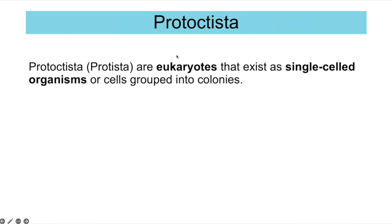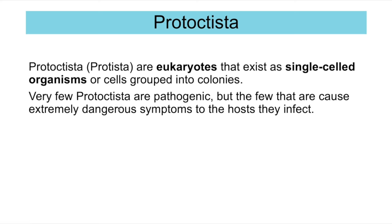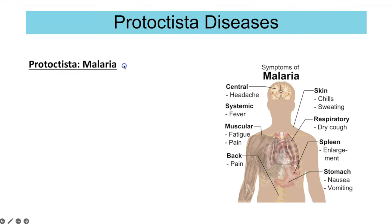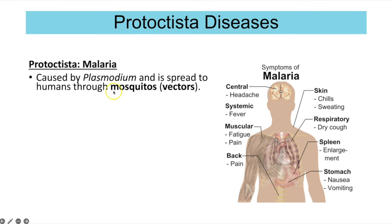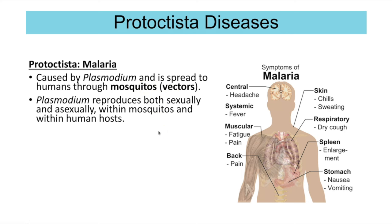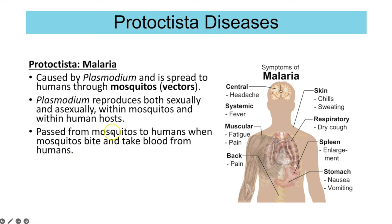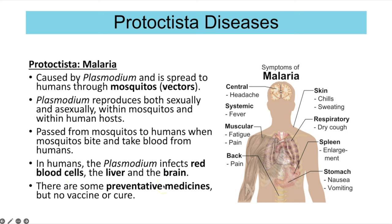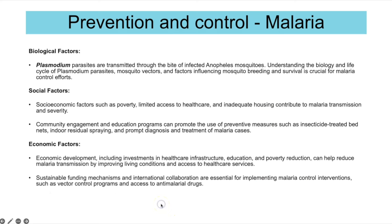Protoctista — or protists — are eukaryotes, either single-celled organisms or cells grouped into colonies. Very few are pathogenic, but those that are can be incredibly dangerous. Pathogenic protoctistas are parasites usually transmitted through a vector. The key example is malaria, caused by the protoctista Plasmodium and spread to humans through the vector mosquitoes. Plasmodium reproduces both sexually and asexually within mosquitoes and within the human host. In humans it infects the red blood cells, liver and brain. There are some preventative medicines but no vaccine and no cure.